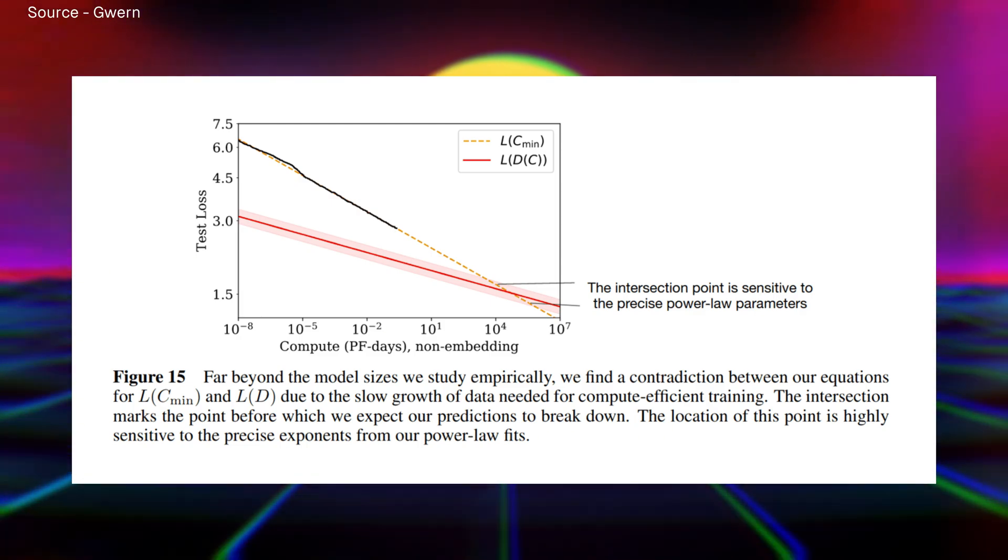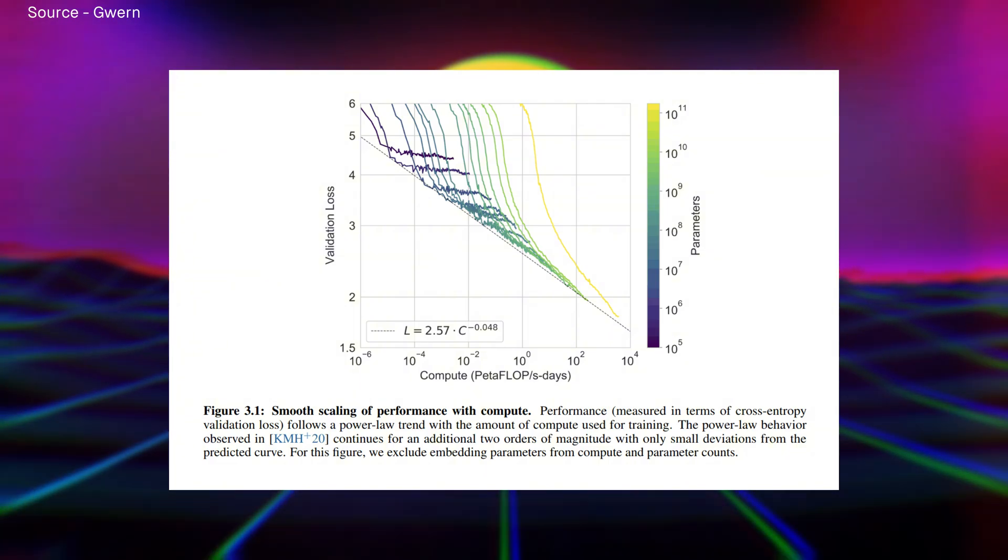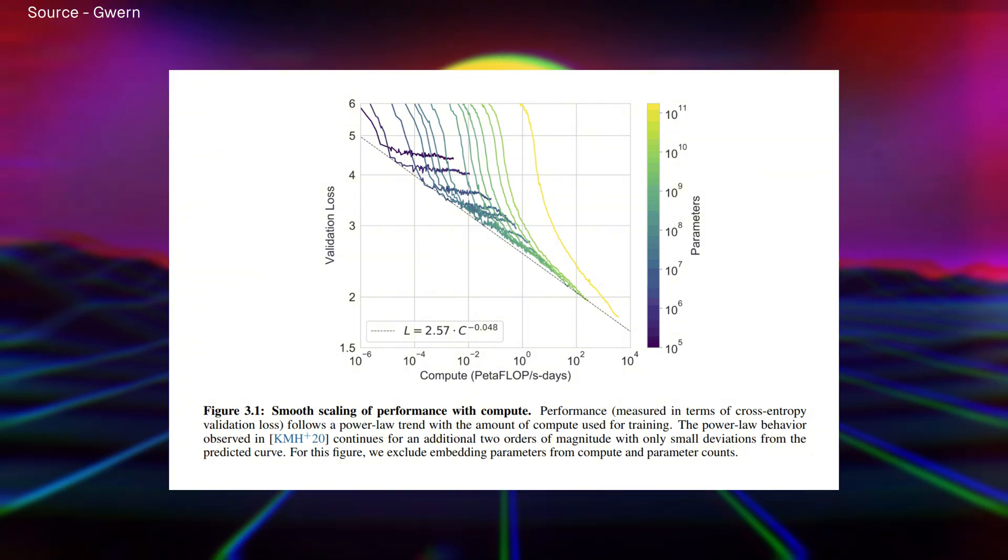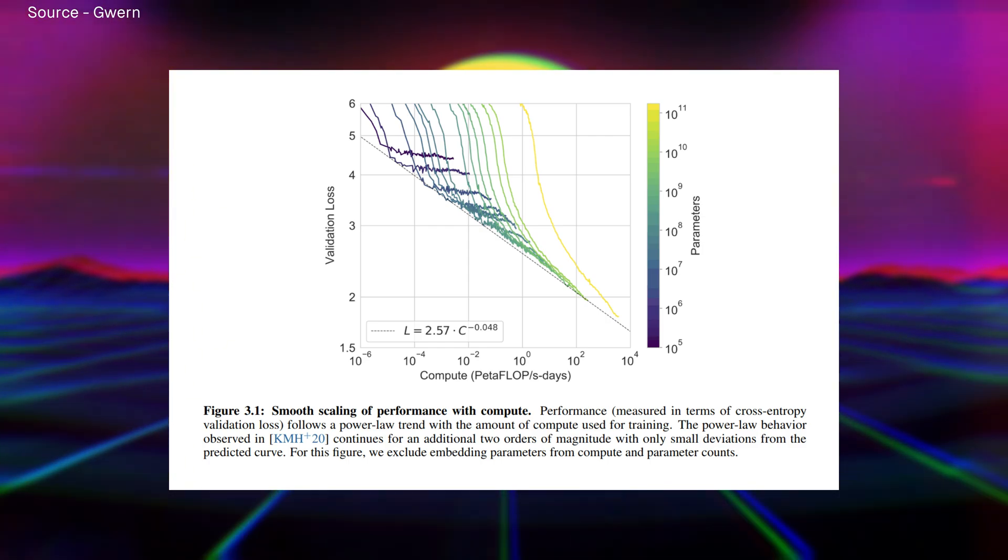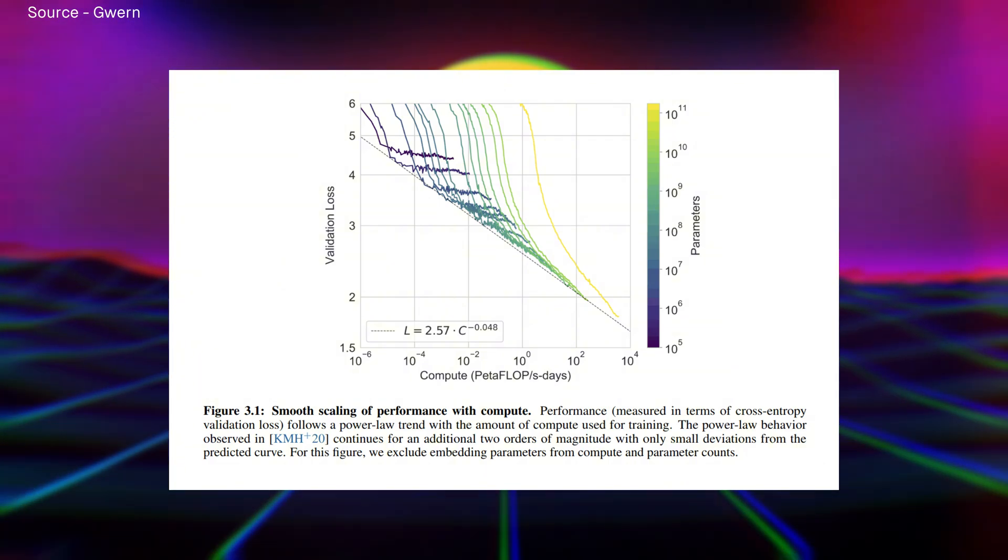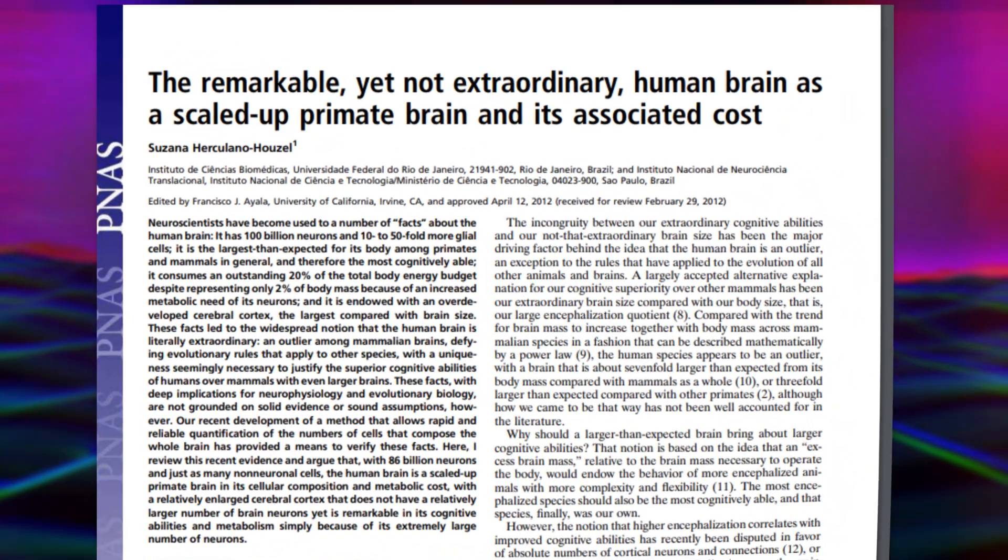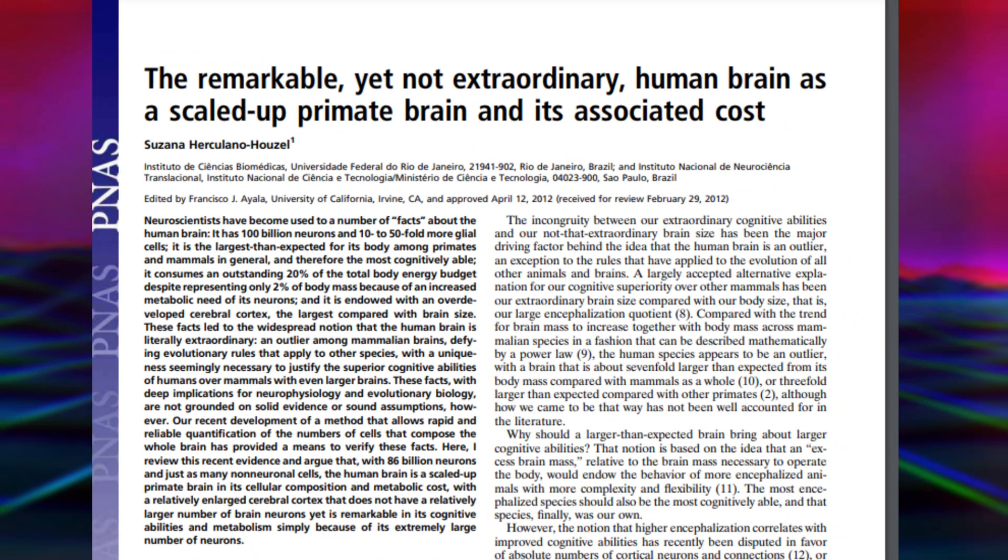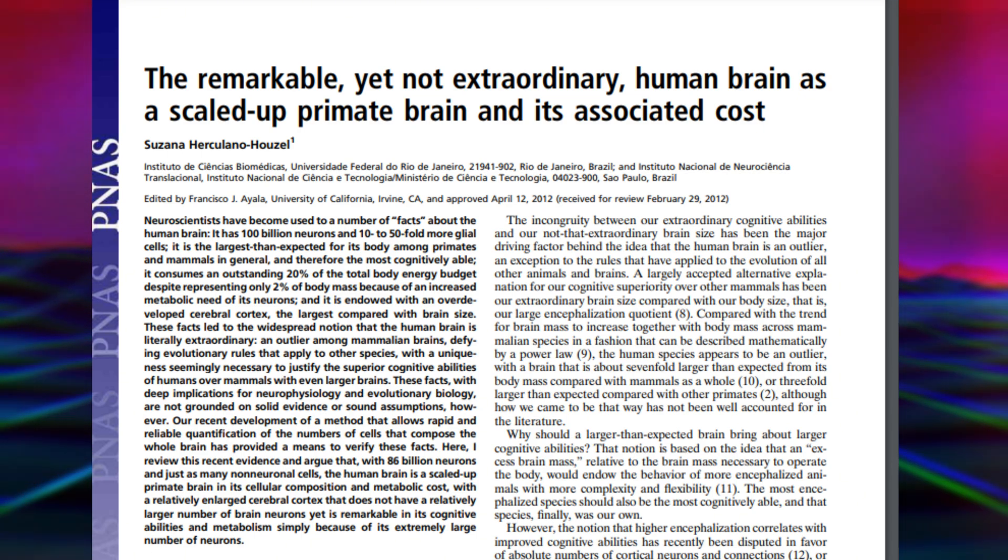What's particularly striking is how predictable these improvements are. Researchers have found that many aspects of neural network performance follow clear power laws, mathematical relationships that show how performance improves with scale. These aren't just rough trends, they're remarkably precise predictions that hold true across different types of models and tasks. But here's where the hypothesis gets truly provocative. Some researchers believe this scaling behavior might continue all the way to human-level intelligence and beyond. They argue that just as nature created intelligence through evolutionary scaling of neural systems, we might achieve artificial general intelligence simply by scaling up our artificial neural networks.